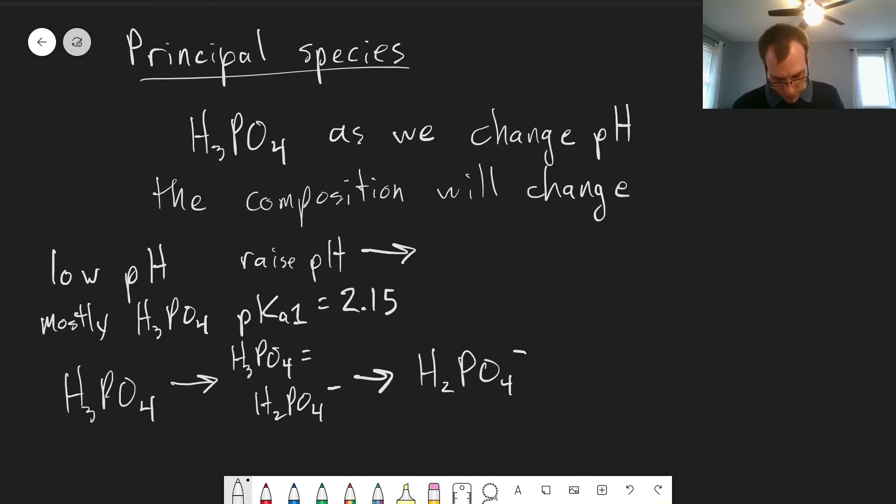And at a certain point, all the H3PO4 will get used up and will all become H2PO4 minus. And then as we keep raising the pH, that H2PO4 minus is going to start turning into monohydrogen phosphate with only one proton on it.